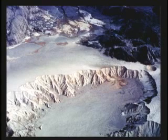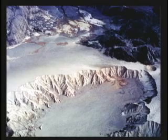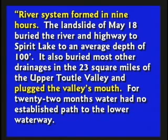After the ice explosions, there would be a pit where everything would slump back in. All around these steam explosion pits you can see erosion marks. Some teacher someday is going to take kids here and say this took thousands or millions of years to form — no, this took about 15 seconds. The river system formed in nine hours. After the landslide of May 18th buried the river and highway to Spirit Lake to an average depth of 100 feet, it also buried most other drainages in the 23 square miles of Upper Tootle Valley.